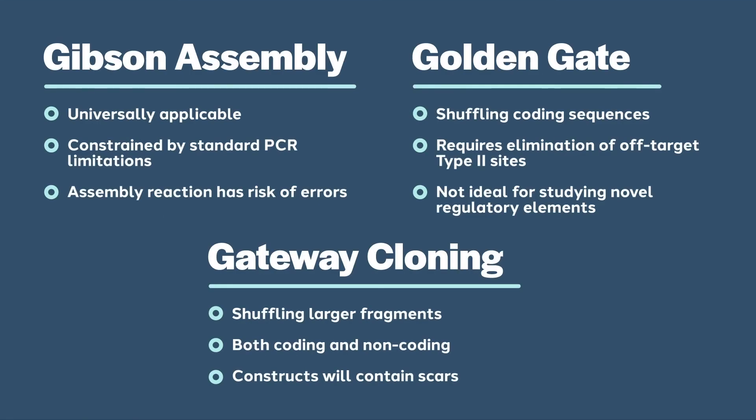To summarize these multi-fragment cloning strategies: Gibson assembly is the most universally applicable, has the lowest barriers to entry, is constrained by limitations imposed by PCR, and has a small risk of errors being introduced at junctions — either of which can be overcome by sequence analysis of sufficient clones. Gateway cloning is best suited for the designed reassortment of various molecular subsets, including regulatory elements, though scars will remain after assembly and design should anticipate these. Golden gate cloning is also a modular cloning technique; with appropriate design it is scarless and seamless, and is well suited to recombining different coding sequences. Part of the process of designing your golden gate toolkit is identifying off-site enzyme recognition sites in your inserts and eliminating them with site-directed mutagenesis.